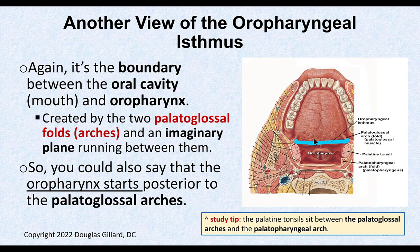Here's an overhead view. You can see the palatoglossal fold — that's exactly where the imaginary line is drawn. Anything forward where the tongue is, that's the oral cavity. Anything behind that line, we're in the pharynx — specifically the oral pharynx. So technically, the palatine tonsils are not in the oral cavity; they're behind the oropharyngeal isthmus line. They actually sit in the oral pharynx — not the oral cavity.